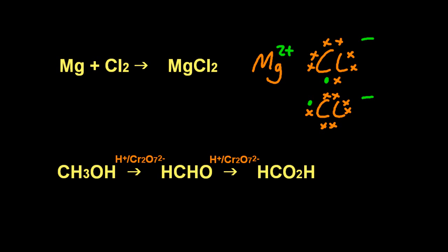So oxidation is loss of electrons. So the magnesium has undergone oxidation. And reduction is gain. OIL RIG. So chlorine is reduced.